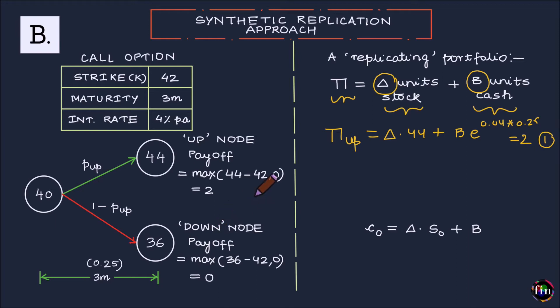My second equation is that the value of my replicating portfolio in the down node which is delta times 36 plus B e to the power 0.04 times 0.25 should be equal to the value of my call option as of this node which I know is 0. So this is my second equation.